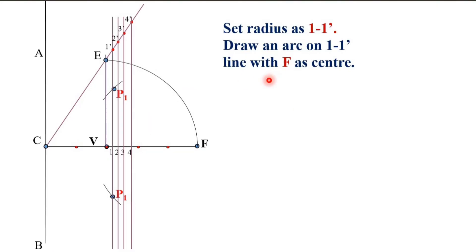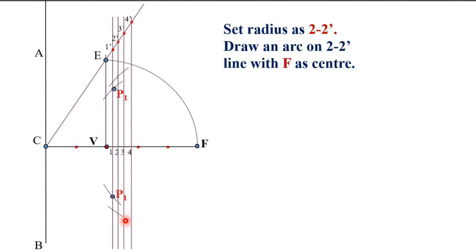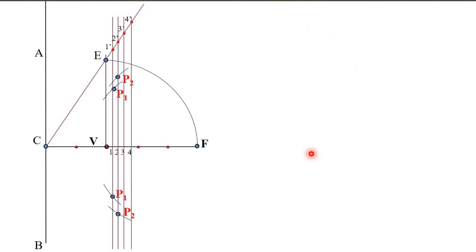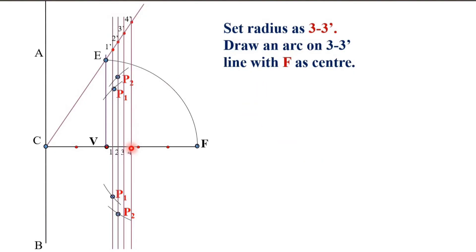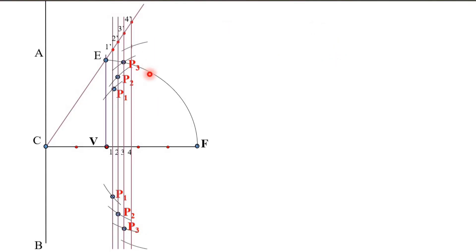Repeat the same step: set the radius as 2 to 2 dash, draw the arc on the 2–2 dash line with F as the center, and you will get point P2. Next, set the radius as 3 to 3 dash, draw the arc on the 3–3 dash line with F as the center, and you will get point P3. Similarly, you will get P4.